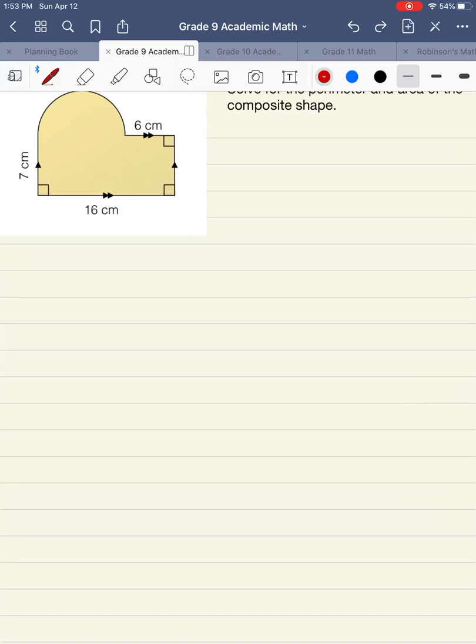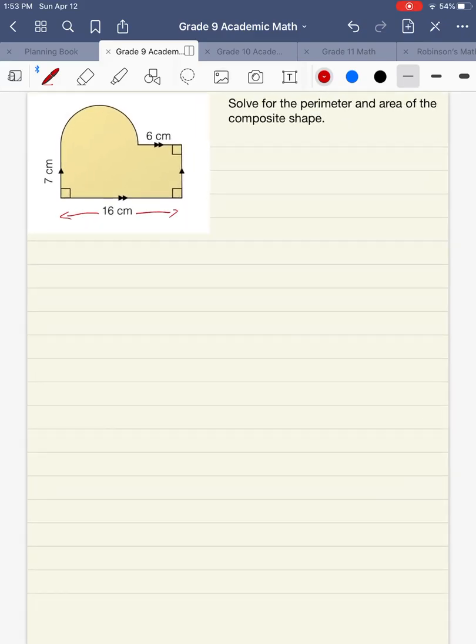So along the bottom here, you can see that this is 16 centimeters, and we're going to use that measurement to find out the diameter of our semicircle. So right here, this is our diameter. I'll just put a little point in the middle to show the center. So up here, we have 6 centimeters, and then down along the bottom, as we just labeled, we have 16 centimeters.